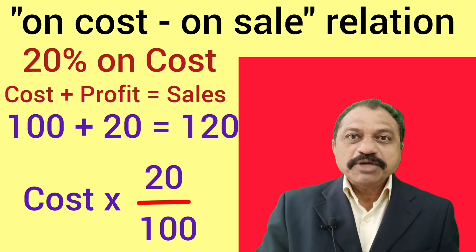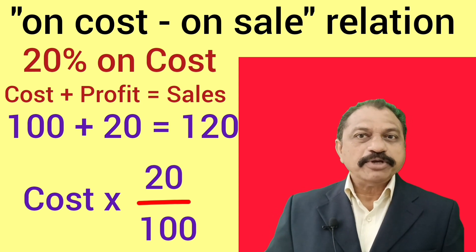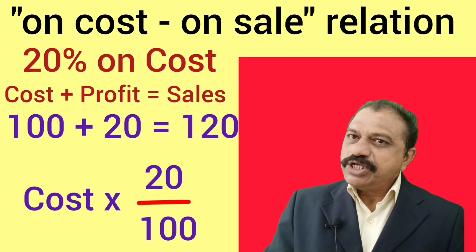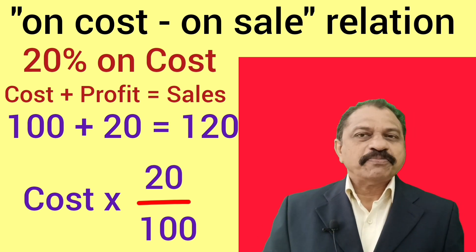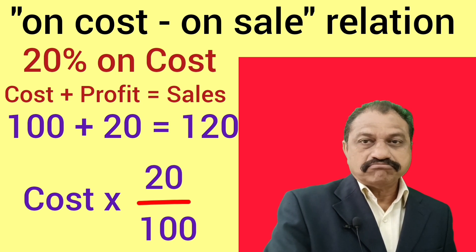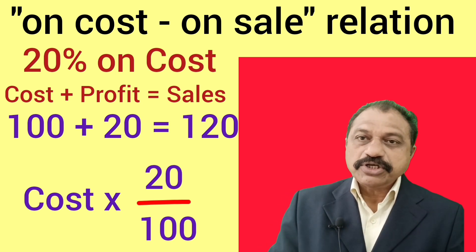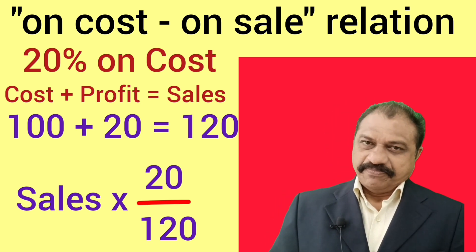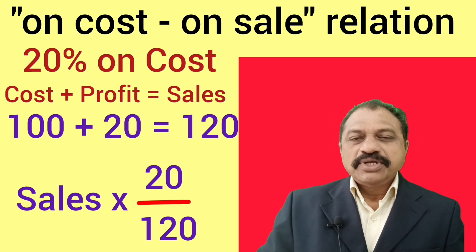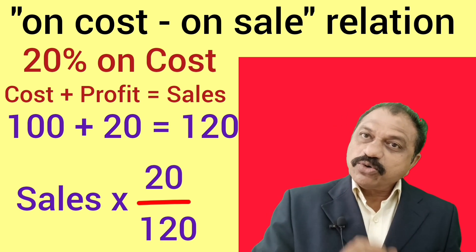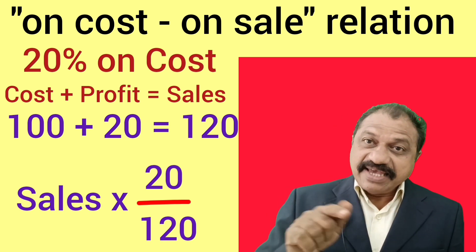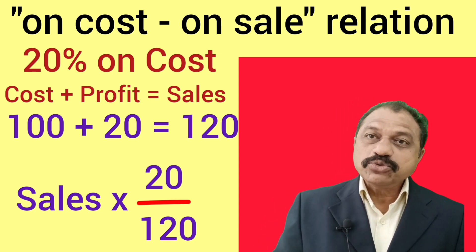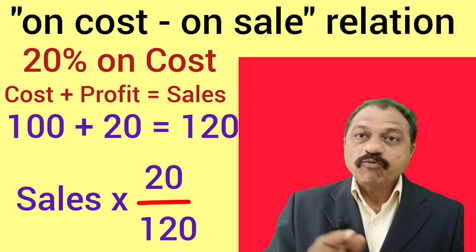Here you have to remember two important points. Point number one: profit is 20% on cost — if cost is given in the problem, then profit is equal to cost multiplied by 20 divided by 100. Point number two: profit is 20% on cost — if sales is given in the problem, then profit is equal to sales multiplied by 20 divided by 120.